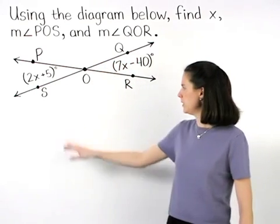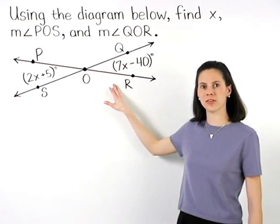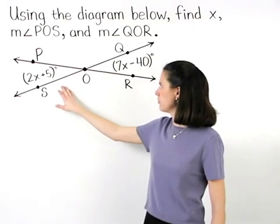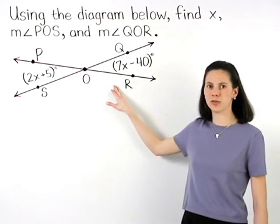Notice that angle POS and angle QOR are vertical angles, so we know that the measure of angle POS equals the measure of angle QOR.